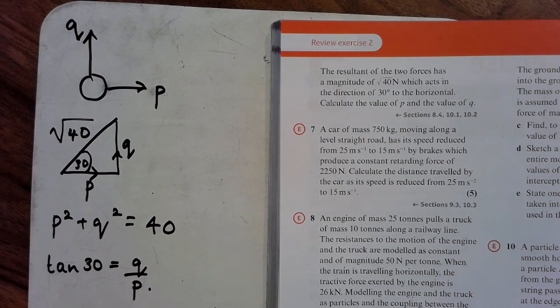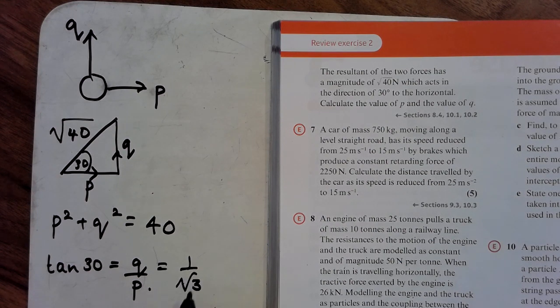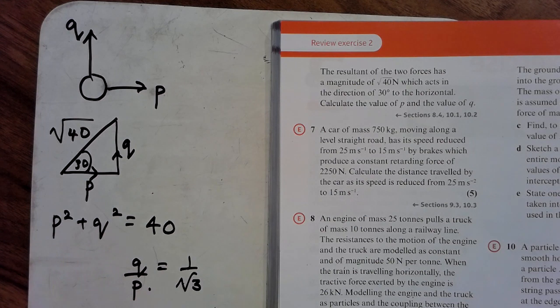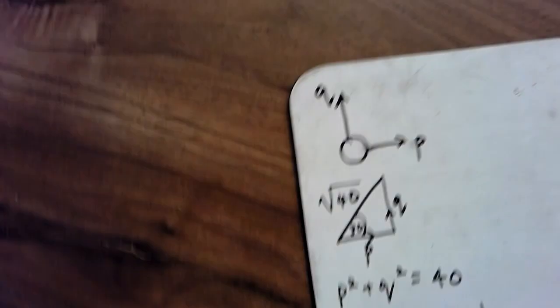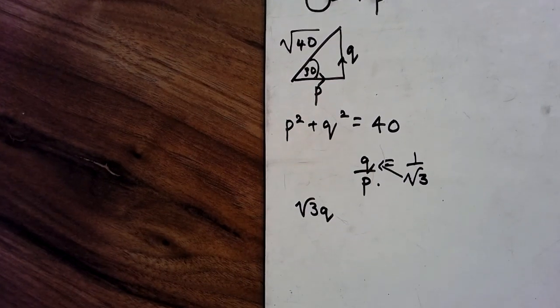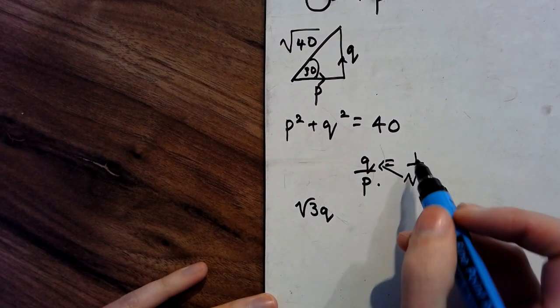Now, tan of 30 is 1 over root 3, I believe. So cross-multiplying here, I get root 3Q, you can't see, sorry. Root 3Q equals P,